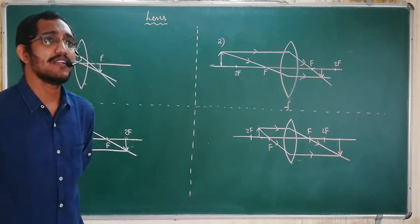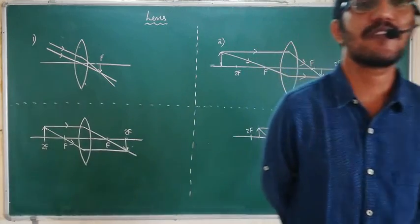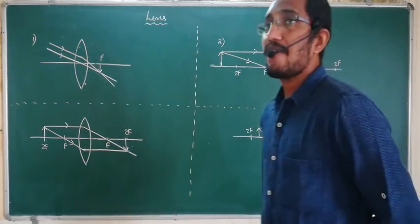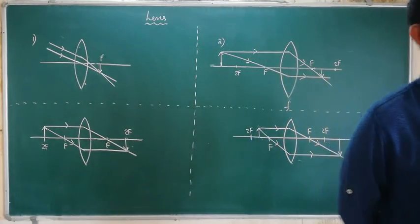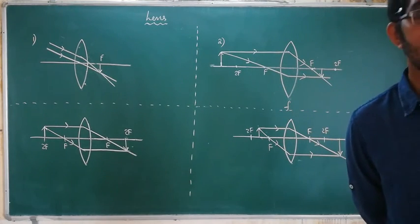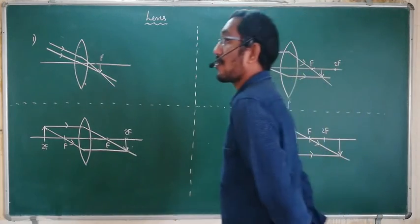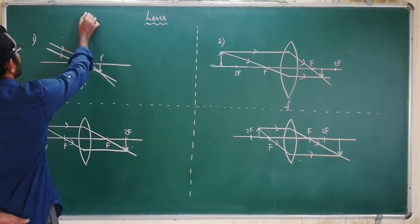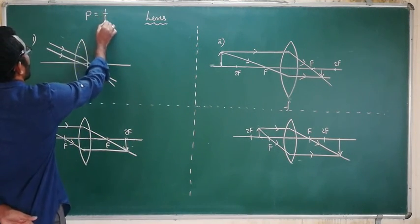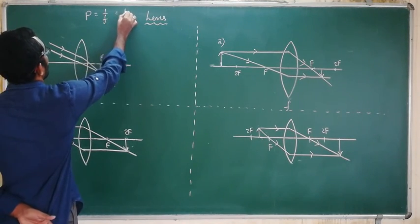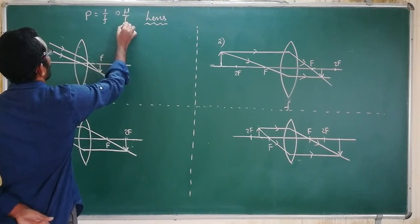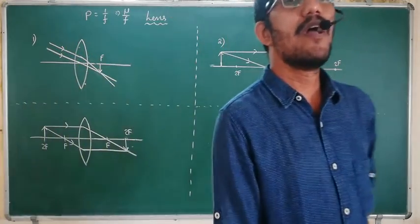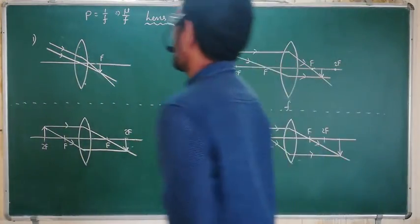What is the focal length of the lens? What is the power of a lens? Power of a lens means the reciprocal of focal length. When a lens is placed in a medium whose refractive index is not equal to 1, meaning other than air, then power is equal to mu divided by f, where mu is the refractive index of the medium.